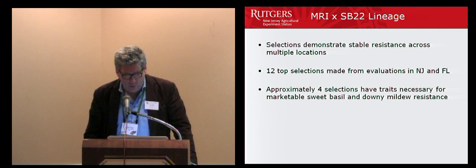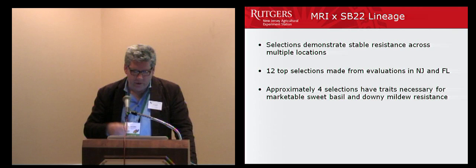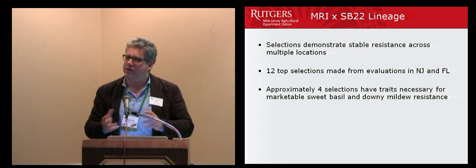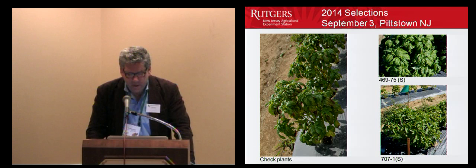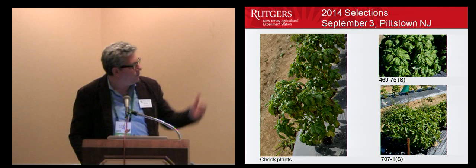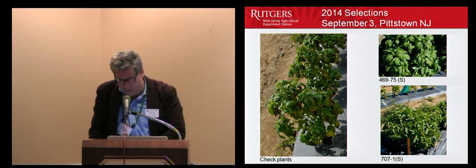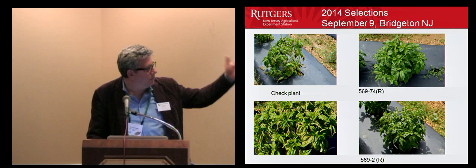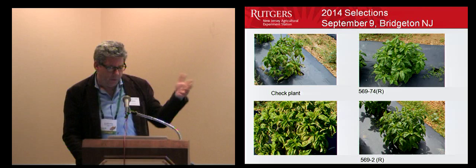You can't imagine how many arguments we have within our group as to where we are along it or how close we are — we also have to be conservative and not exaggerate where we're going for downy mildew. The coded numbers are Rutgers breeding selecting lines, and these no longer are really odd types, are they?